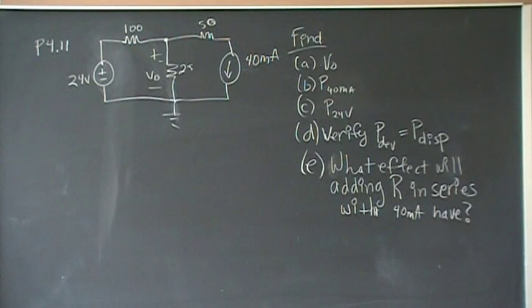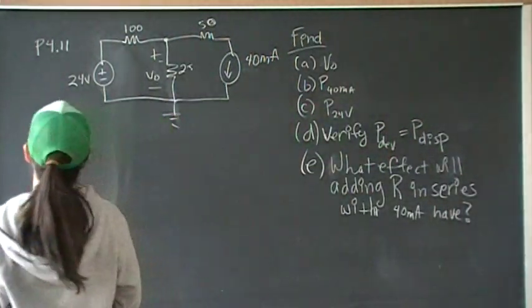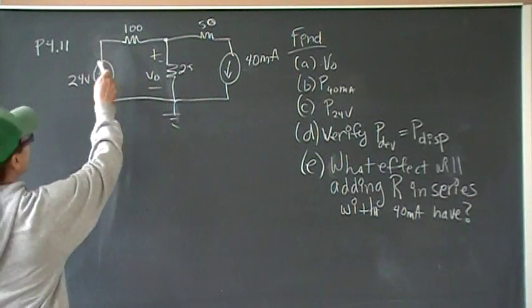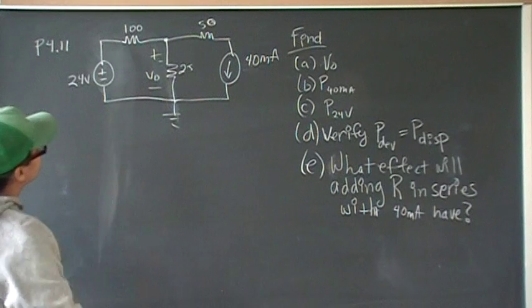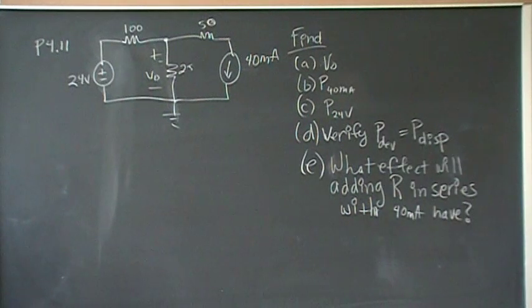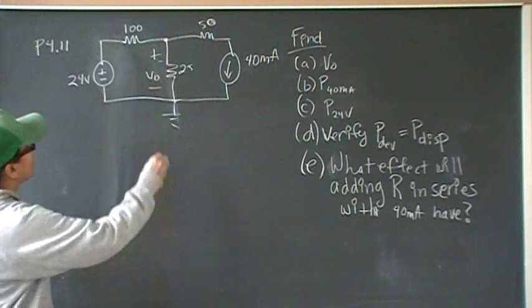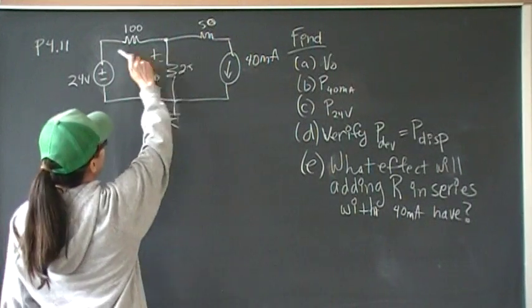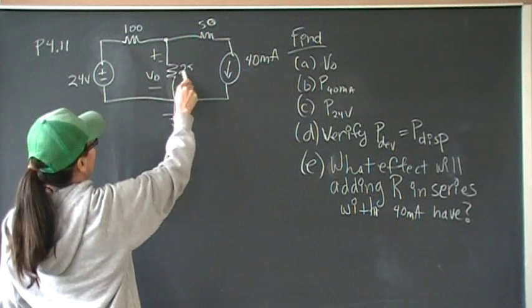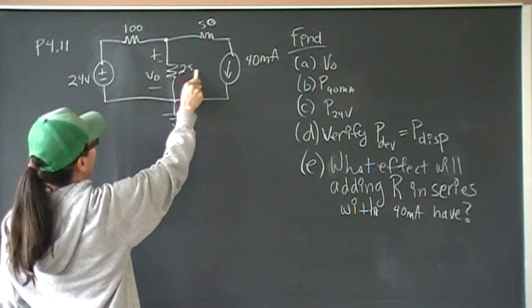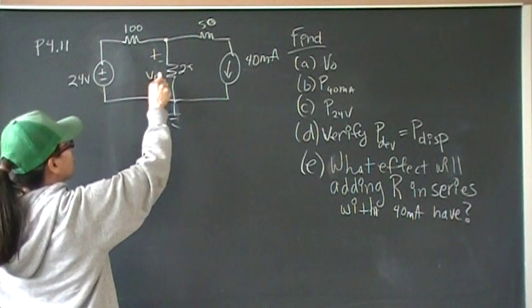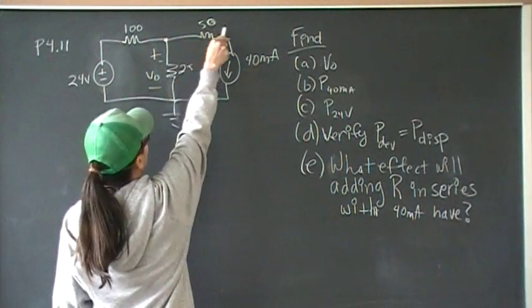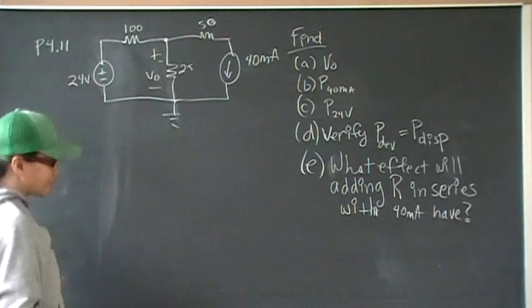This is problem 11 from chapter 4, and we have 24 volts in series with 20 and 80, but I didn't see any reason to not combine that into 100, so that's what I did. In series with 100 ohms of resistance, and then we have a 25 ohm resistor here with some voltage drop of V naught. We have 50 ohms here in series with 40 milliamps, and that's it.